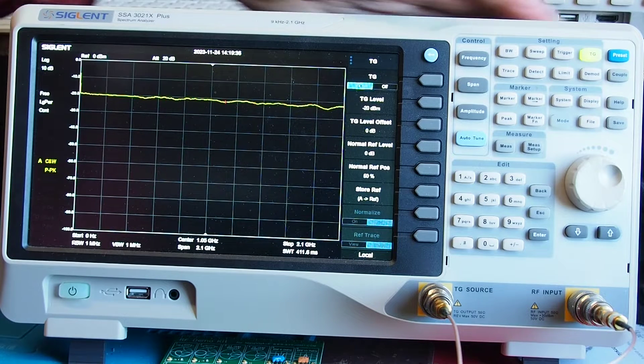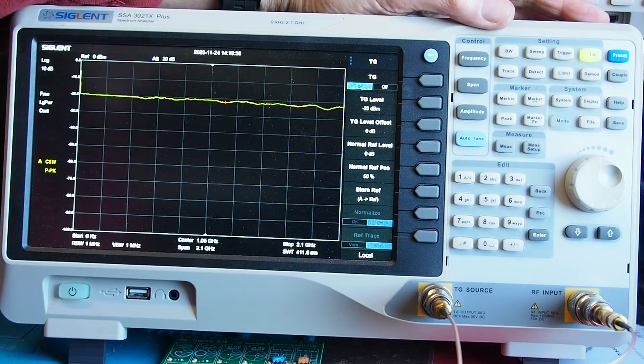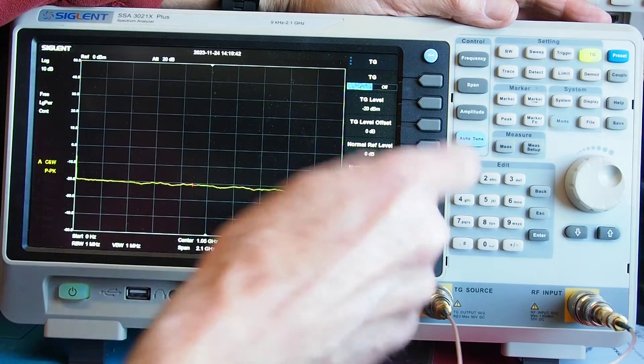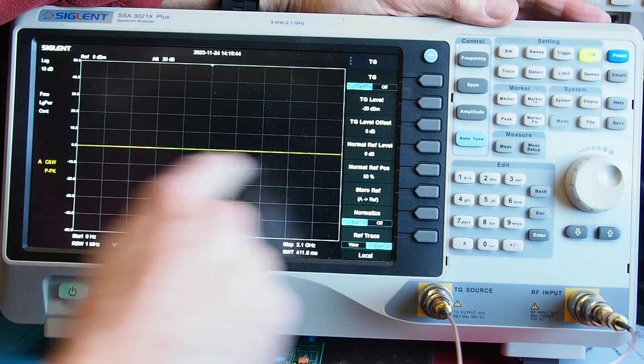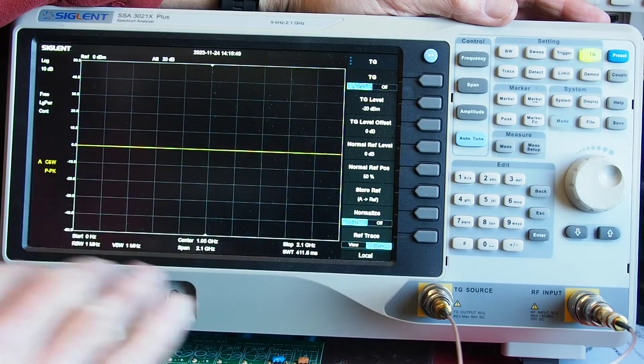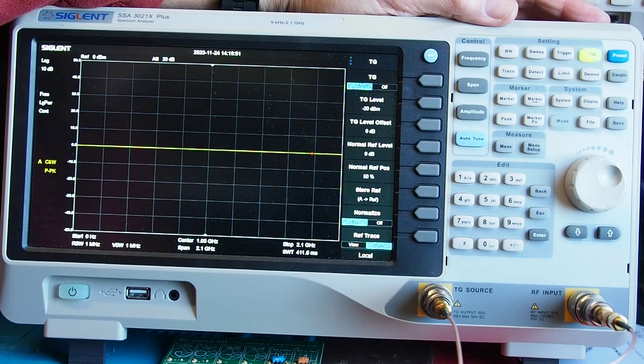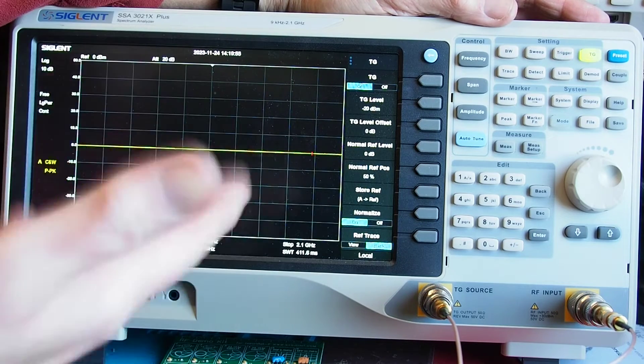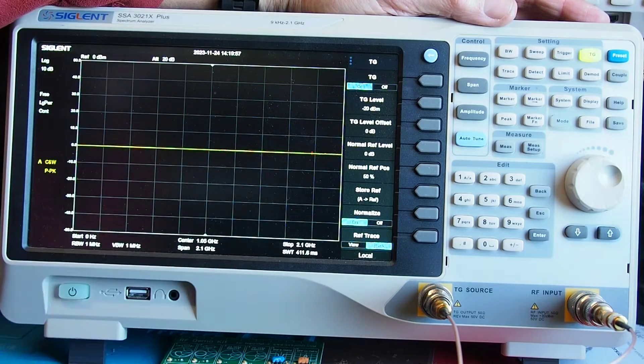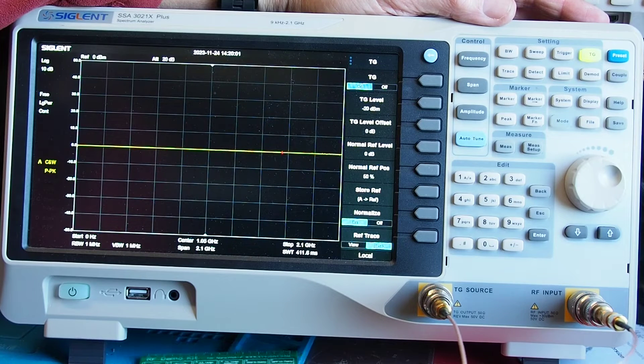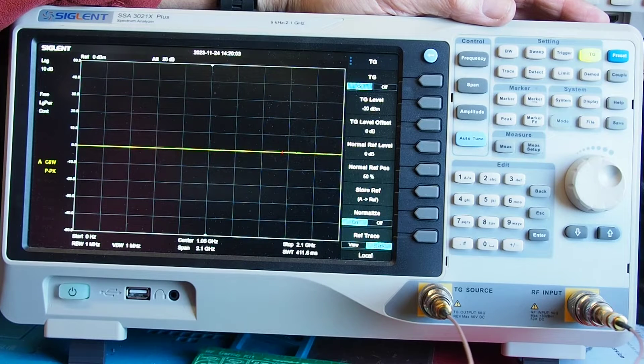Now the analyzer does give you an option to do something about that so if we select store and then select normalize it will draw a straight line but what it's done here is actually it's corrected for any imbalance in output so any measurements we do later will have that correction applied to them.